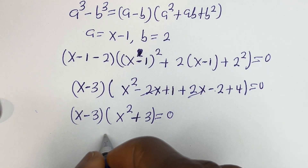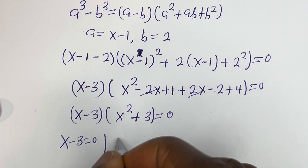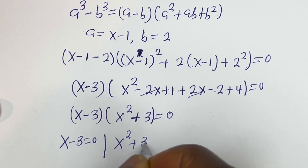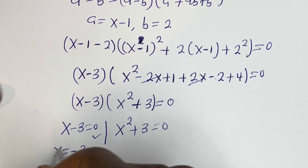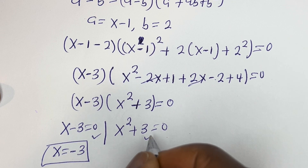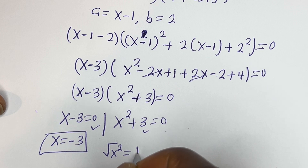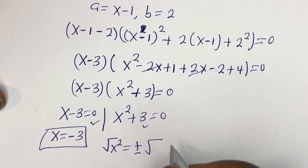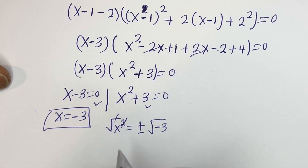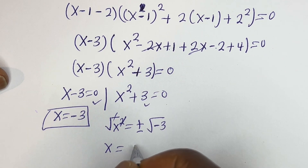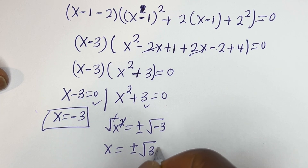There are two sub-cases. The first case is x minus 3 equals 0, so x equals 3. The second case is x squared plus 3 equals 0. Taking the square root of both sides: x equals plus or minus square root of minus 3, which gives x equals plus or minus i root 3. These are also other values of x.